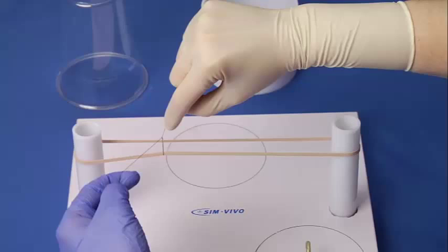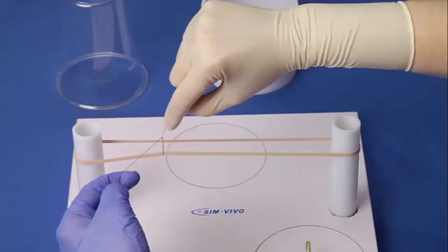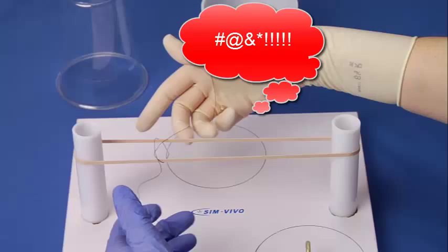you may cinch your first throw down on a structure only to find out that before you can place the second throw, the tissue has pushed the first throw open. There are two ways of dealing with this. The first is starting with a surgeon's knot and the second is using a slip knot.